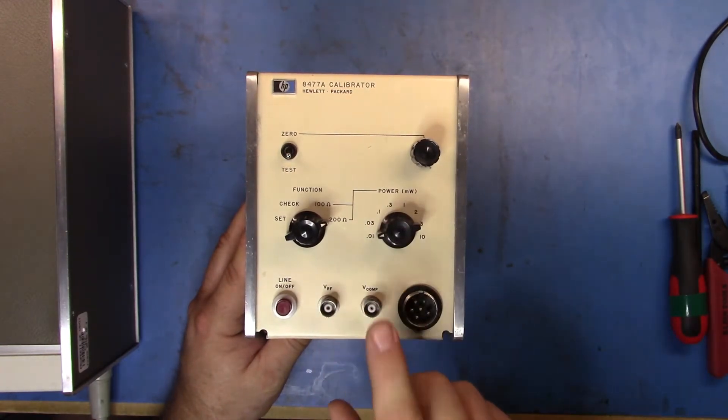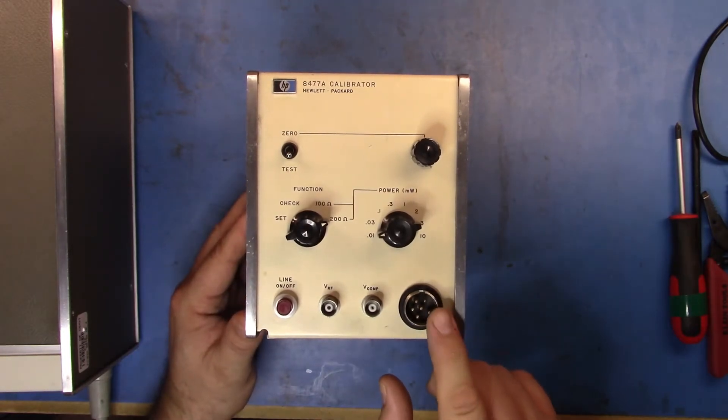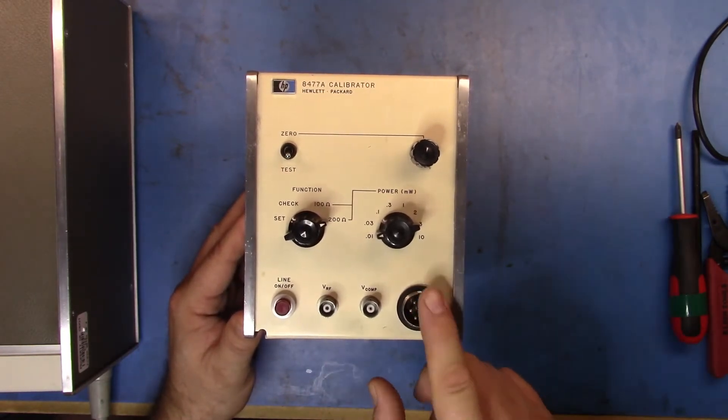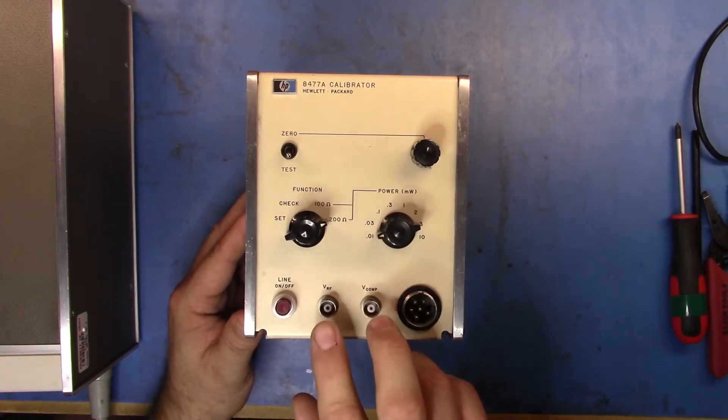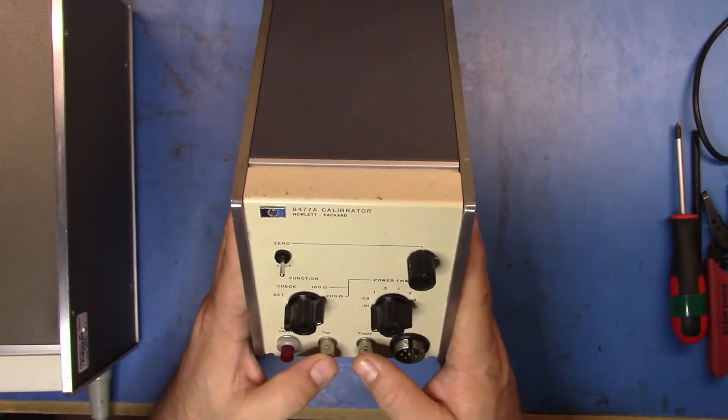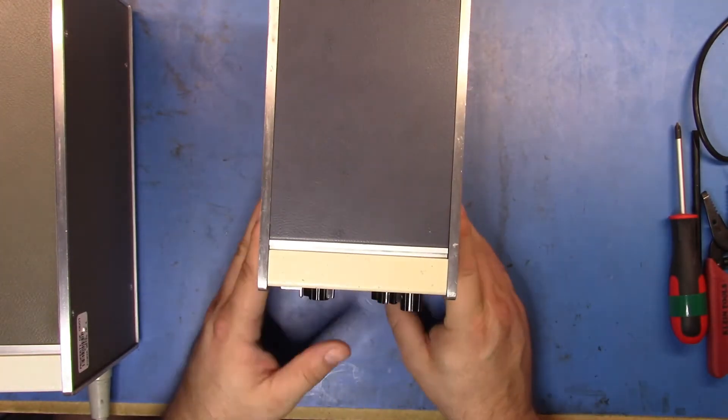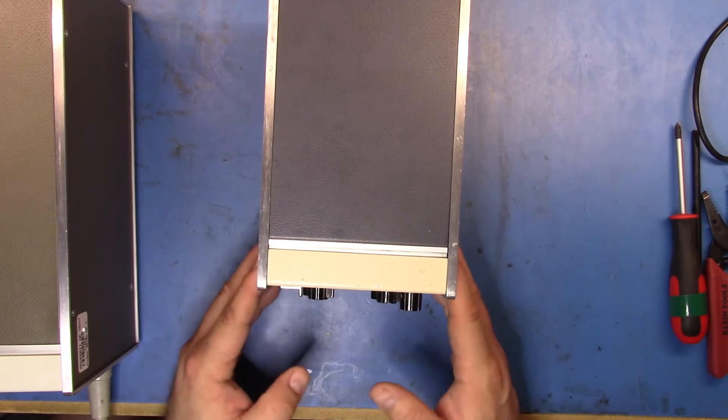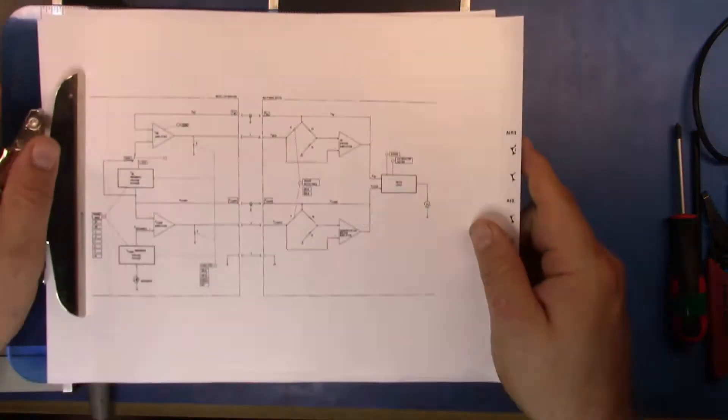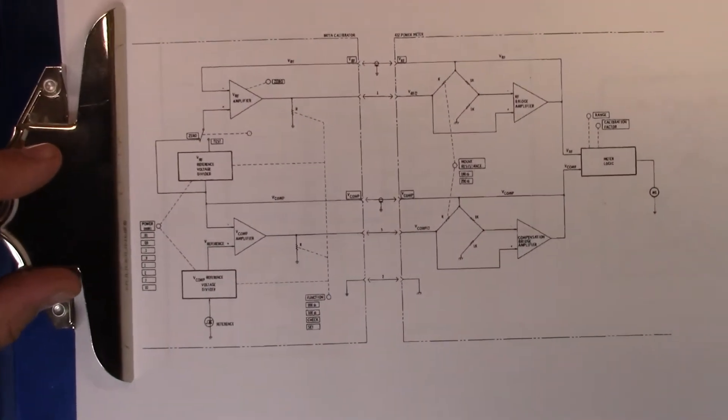Now, how this works is it connects to the meter through the thermistor mount cable, and has two inputs, or two outputs of VRF, or inputs actually for this guy, VRF and VCOMP. And if you've seen the other video, you would have seen how that system works. So let's take a quick look at how that system block diagram looks.